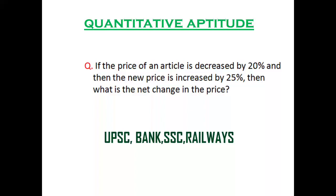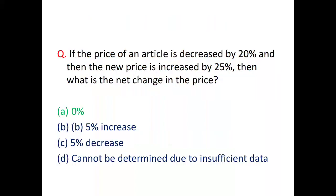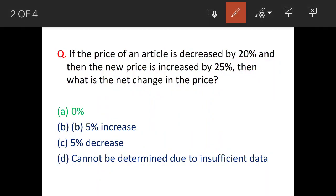We'll see a question on percentages. These questions are asked very frequently in competitive exams. The question is: If the price of an article is decreased by 20% and then the new price is increased by 25%, what is the net change in price? The answer is option A, 0%. Other options are also given, so we'll see how.